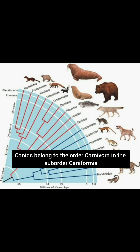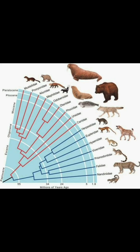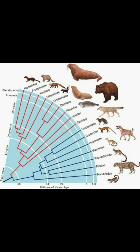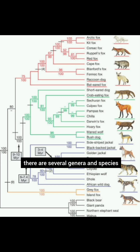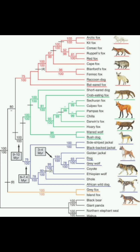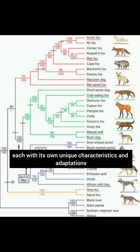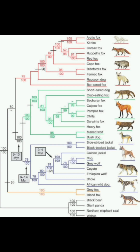Taxonomy. Canids belong to the order Carnivora and the suborder Caniformia. Within the Canidae family, there are several genera and species, each with its own unique characteristics and adaptations.